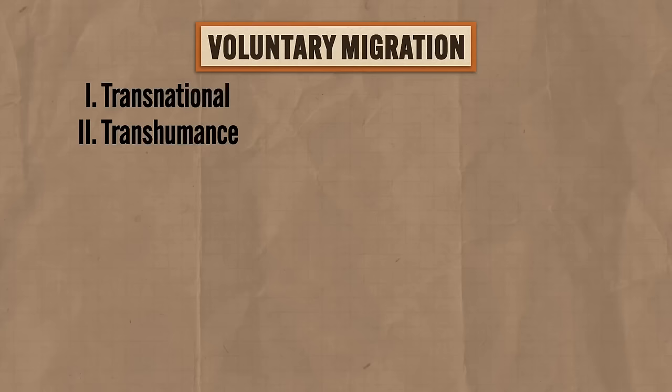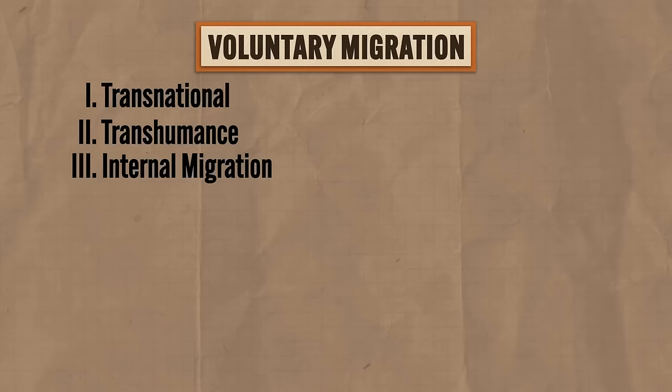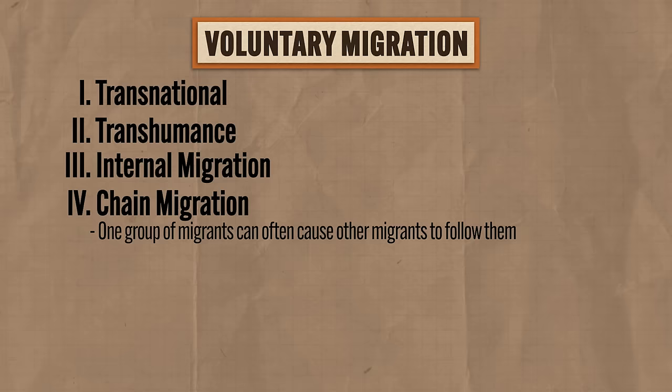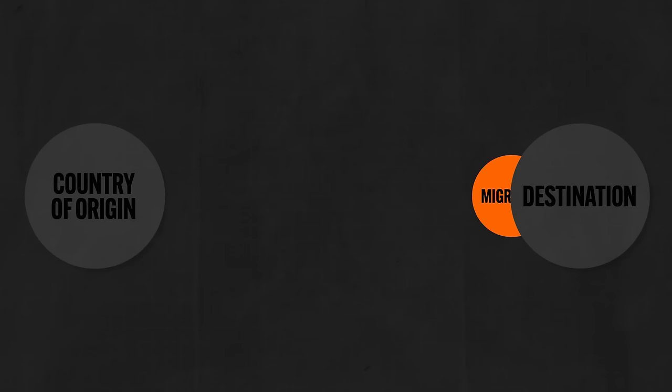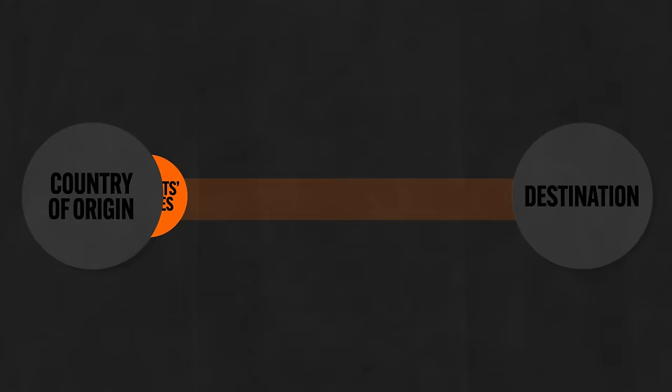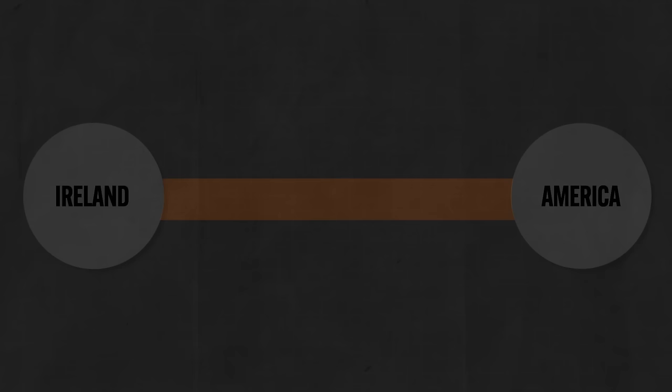Third is internal migration — people who migrate within the borders of a country. According to Ravenstein's laws, most migrations occur over shorter distances because there are fewer intervening obstacles. Fourth is chain migration — one group of migrants can cause other migrants to follow them. The first migrants settle elsewhere due to push and pull factors, establish themselves, stay in contact with those left behind, and then if they've found a better life, those back home follow. The Irish immigration to America is a good example: the first wave was pushed out by famine, and over time as Irish immigrants became more established, more followed.